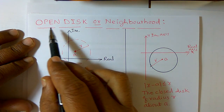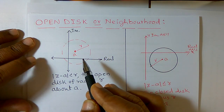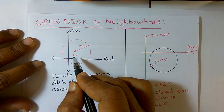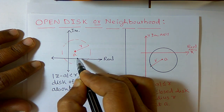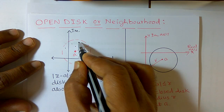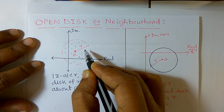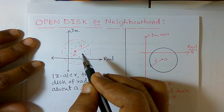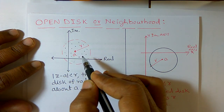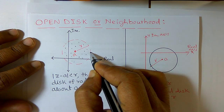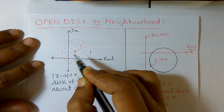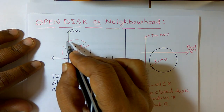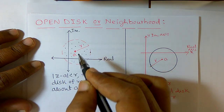You may ask why we call it an open disk — that is the important question. Here, a belongs to this circle, and many other values also belong to the circle. Some values are on the circumference of the circle, and many such values belong to the boundary of the circle.